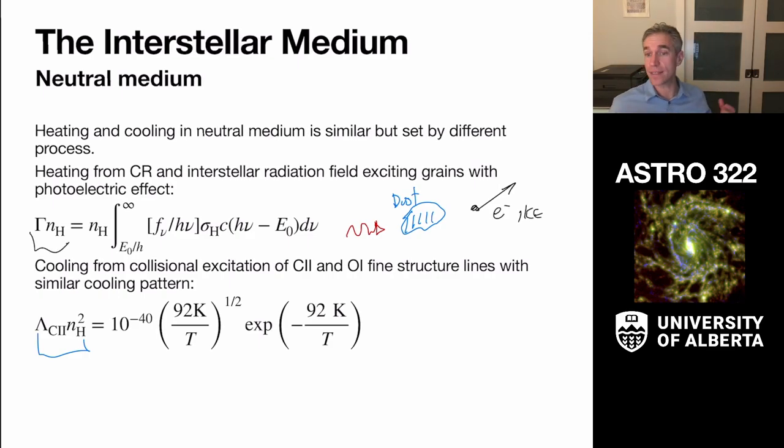And perhaps not surprisingly, this is very similar to something like the H2 region, where the heating is not the ionization potential, but it's basically the photoelectric potential for this dust grain. Similar expression here. In the neutral ISM, the cooling is set by carbon and oxygen.